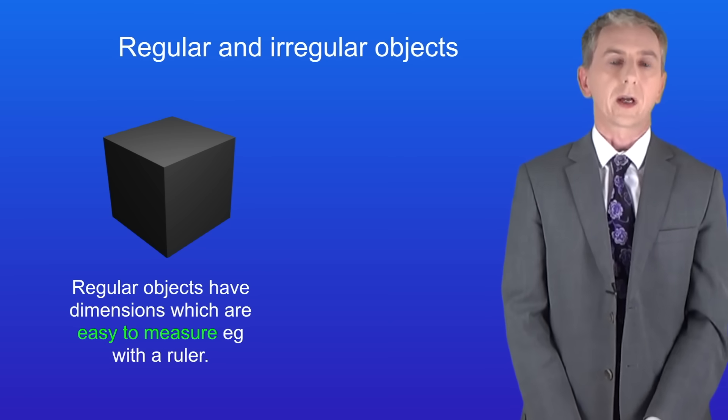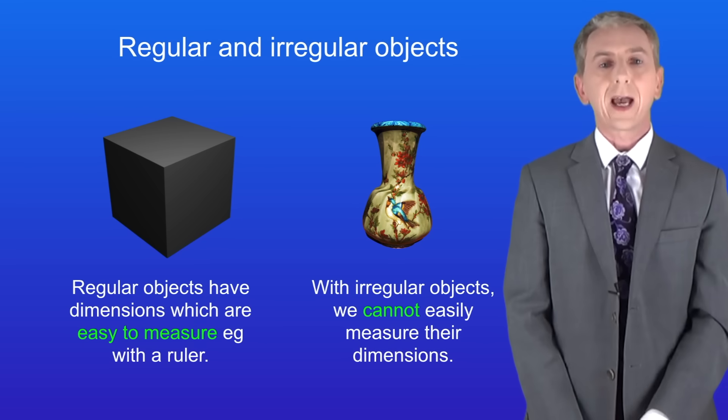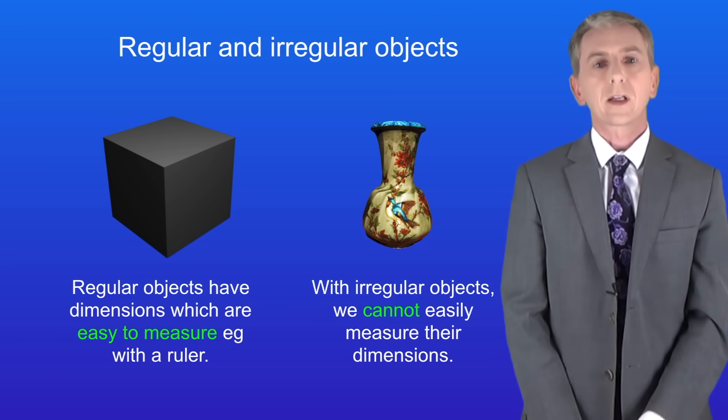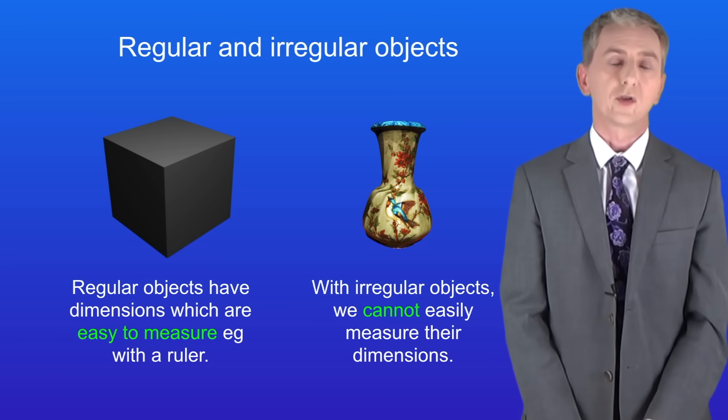With irregular objects such as this vase we cannot easily measure the dimensions. We're going to look at how to deal with irregular objects later. So let's look at how to determine the density of regular objects such as the cube.